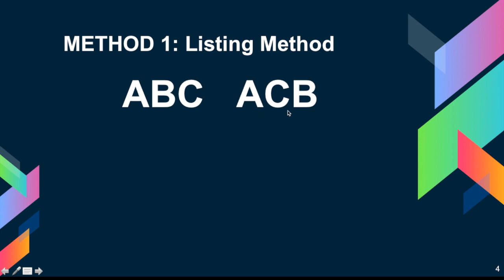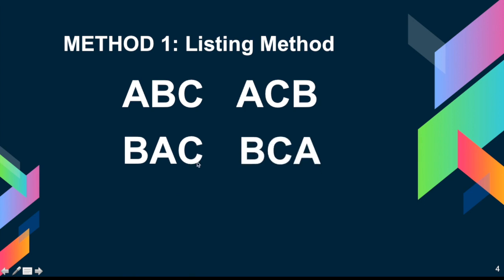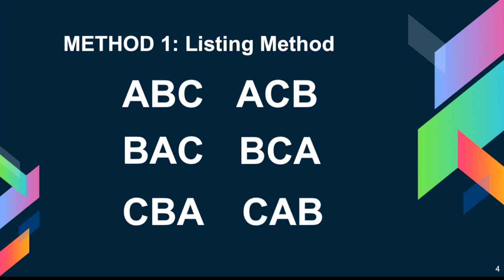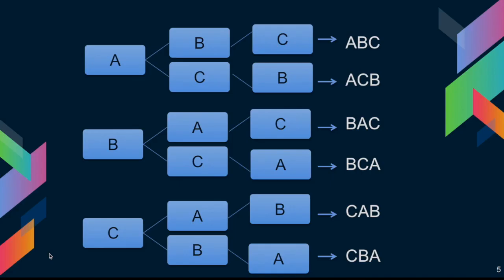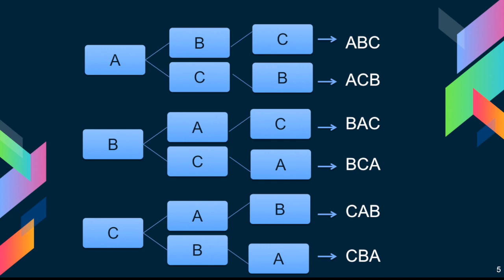We can also have Alan first, followed by Chok and then Bert. Or Bert in front, followed by Alan, then Chok. We can have B, C, A — that's Bert, Chok, and Alan. Or Chok in front: Chok, Bert, and Alan. And finally Chok, Alan, and Bert. In total we have six different arrangements. Notice that A, B, C is a different arrangement from A, C, B. We can also use tree diagrams to come up with all possible arrangements, giving us all six. But the listing method is going to be time-consuming if there are many distinct items involved.